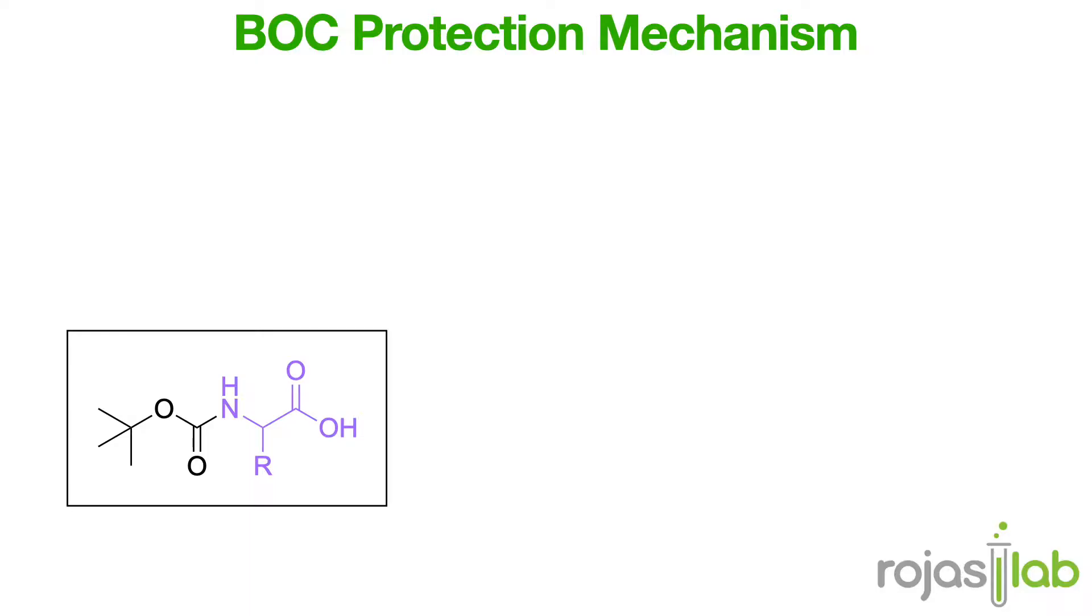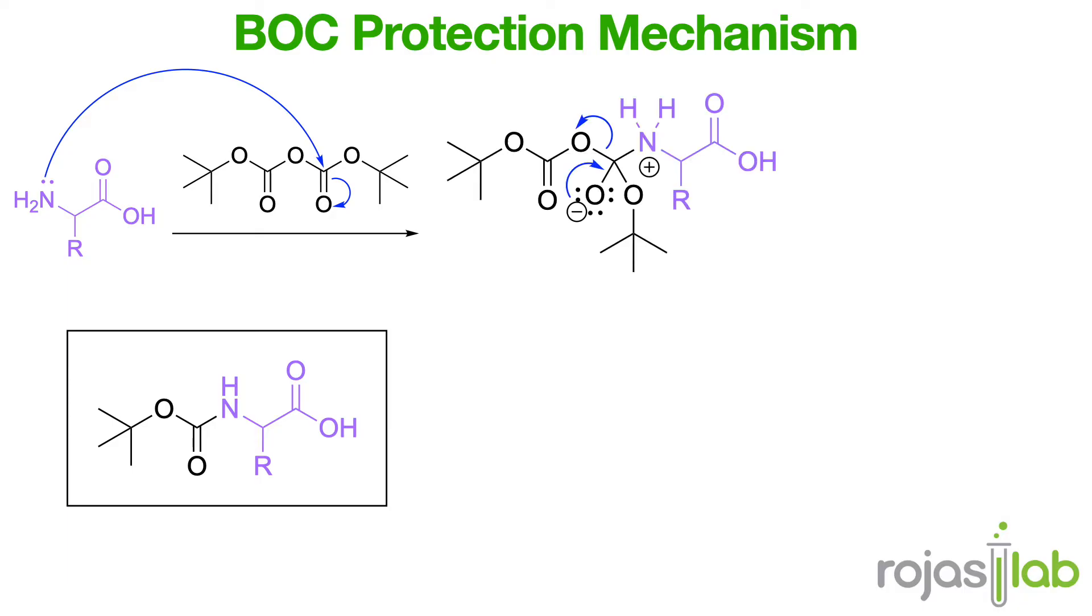What follows is the mechanism for BOC protection. First, the amino group functions as a nucleophile and attacks the carbonyl group. The carbonyl group is reformed, ejecting a resonance stabilized leaving group. Finally, the ammonium ion is deprotonated, yielding the protected amino acid. Importantly, once we have protected these amino acids, following coupling to form our new peptide, we need to be able to remove those protecting groups.